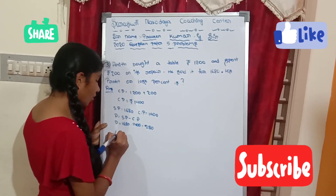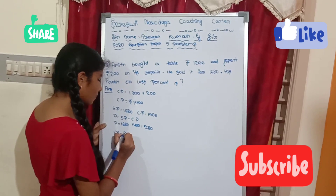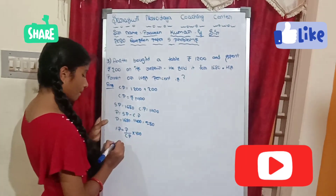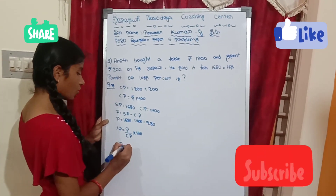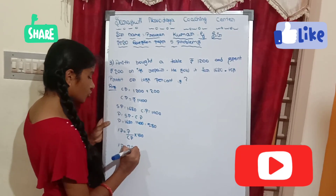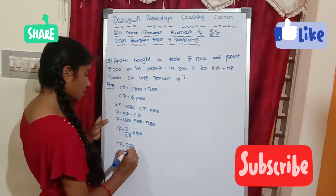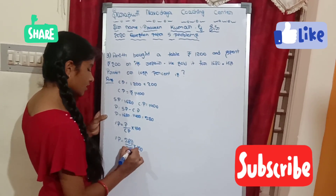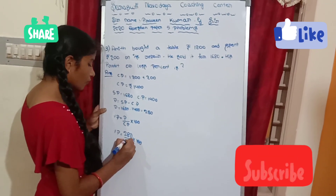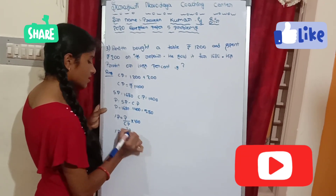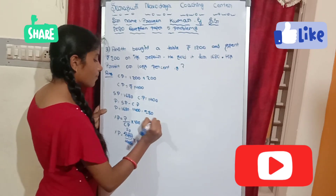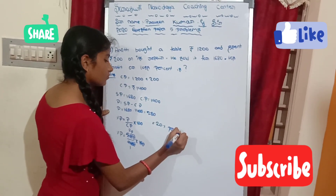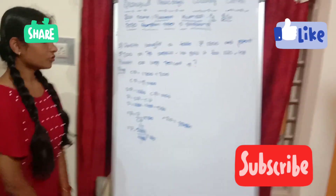Percentage profit equals profit divided by CP into 100. Percentage profit equals 280 divided by 1400 into 100. Cancelling zeros, the answer is 20% profit.